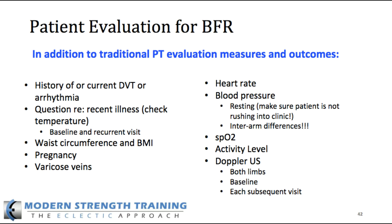Waist circumference and BMI — it may be automatically done in your documentation system already, which is helpful. But looking from a cardiometabolic risk standpoint, waist circumference and BMI really give us an indication of their risk for cardiovascular disease. It doesn't tell you what it is, but it gives you a good idea. The larger the waist circumference and the larger the BMI, the greater the risk for cardiovascular disease.